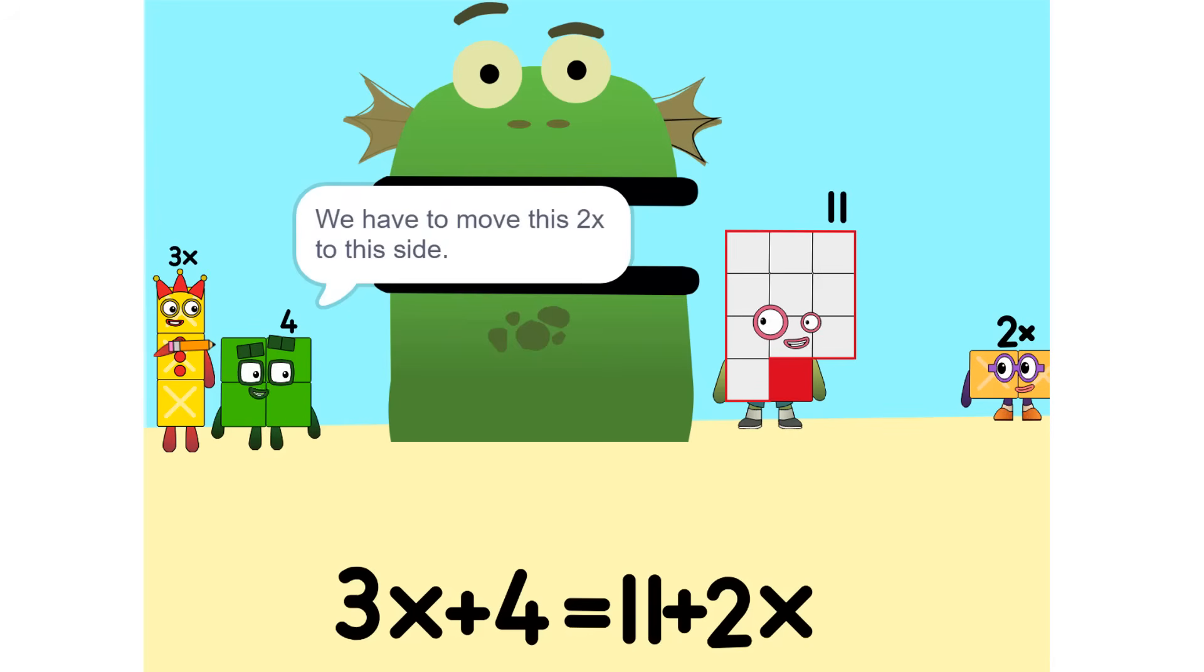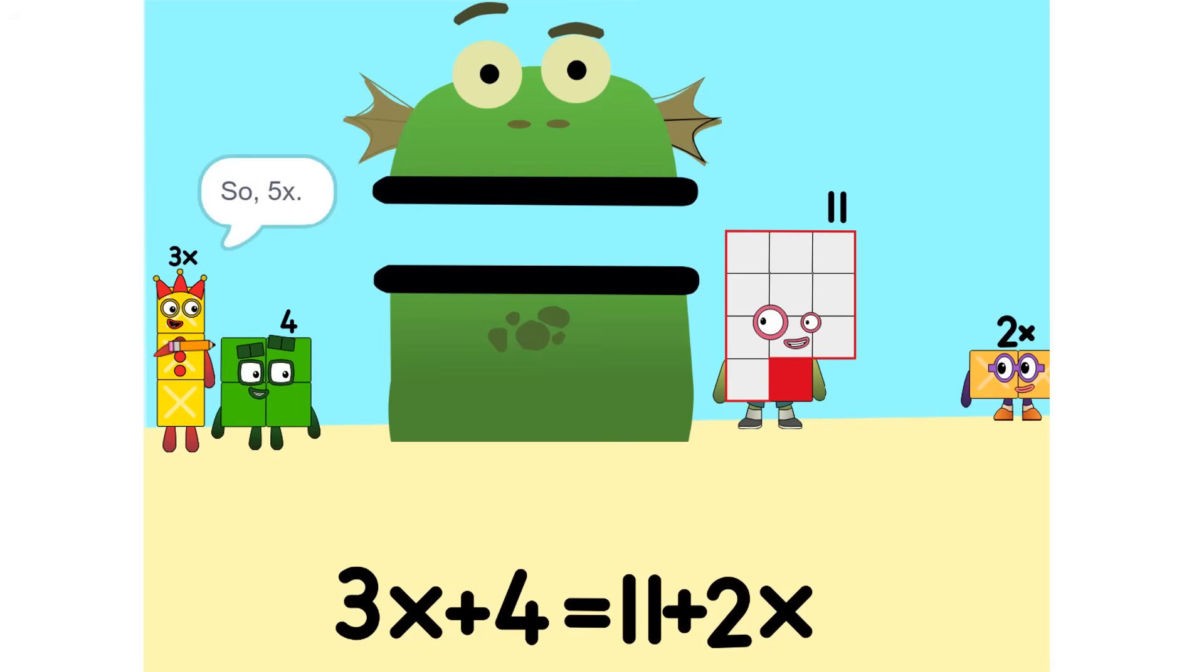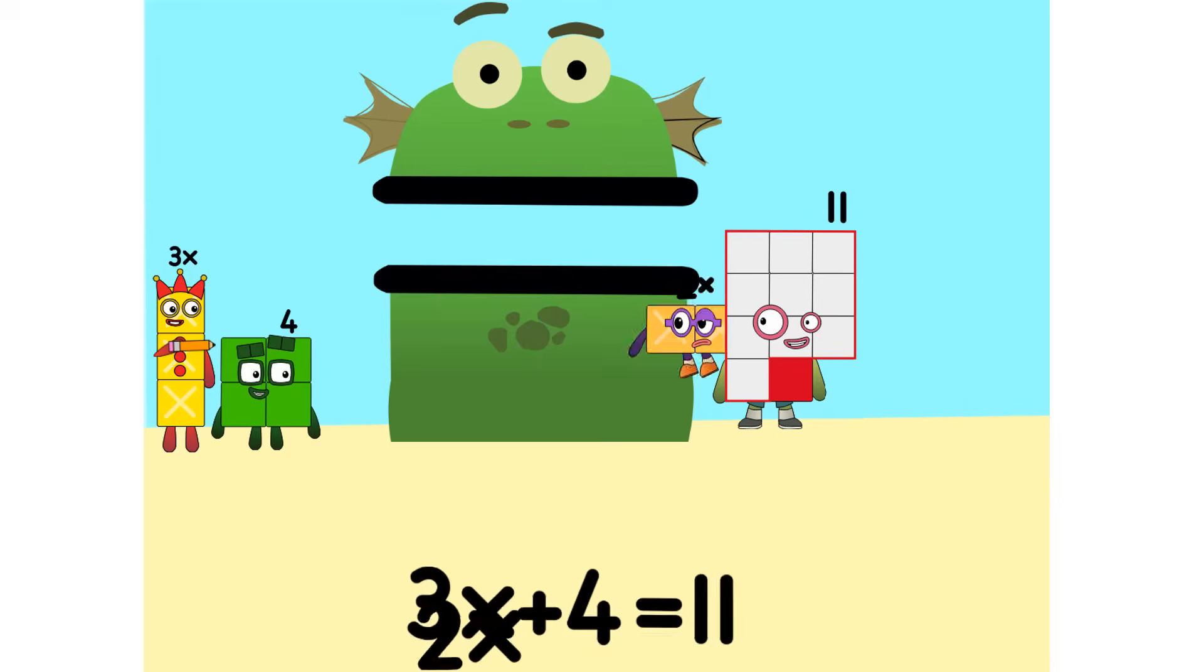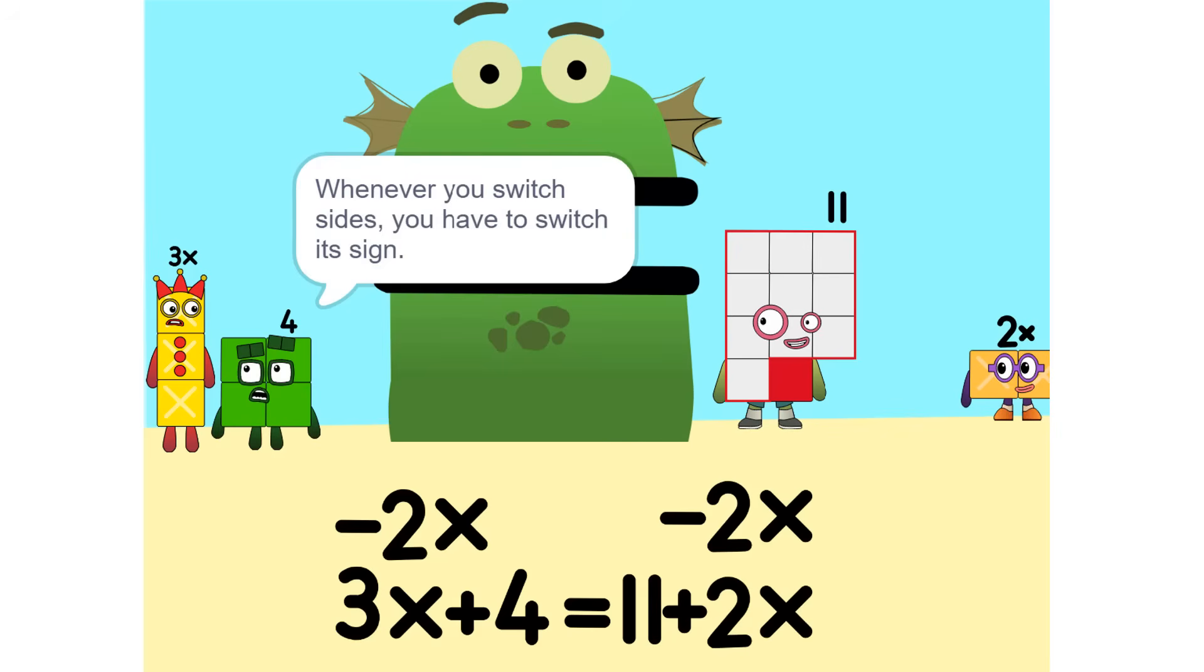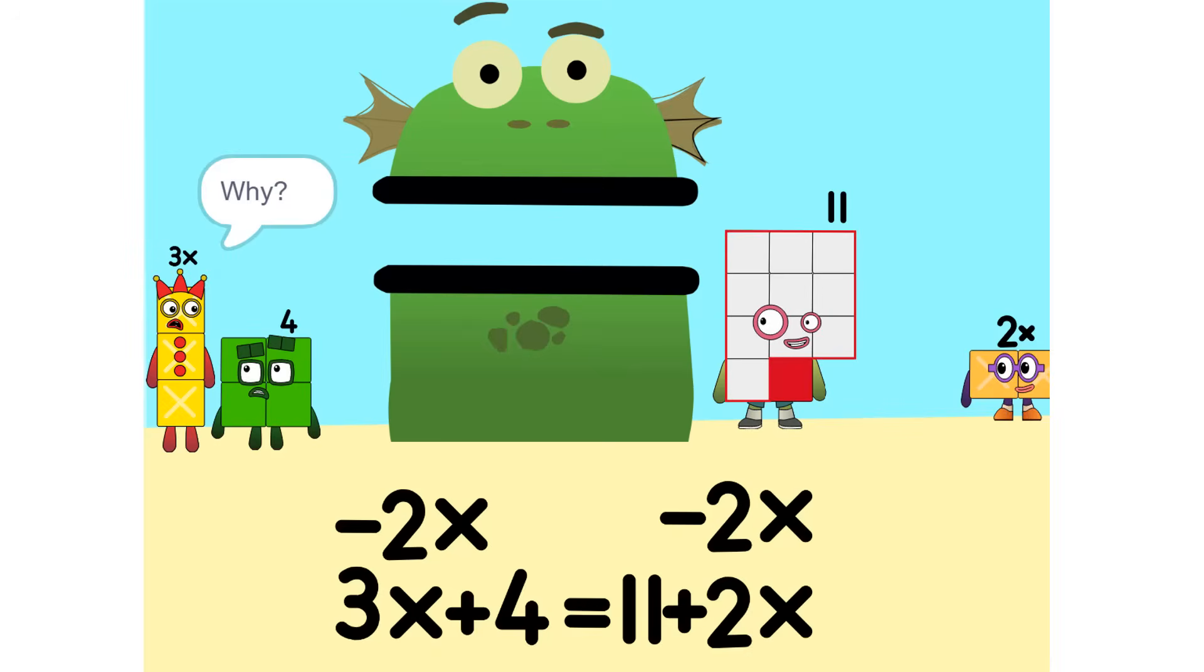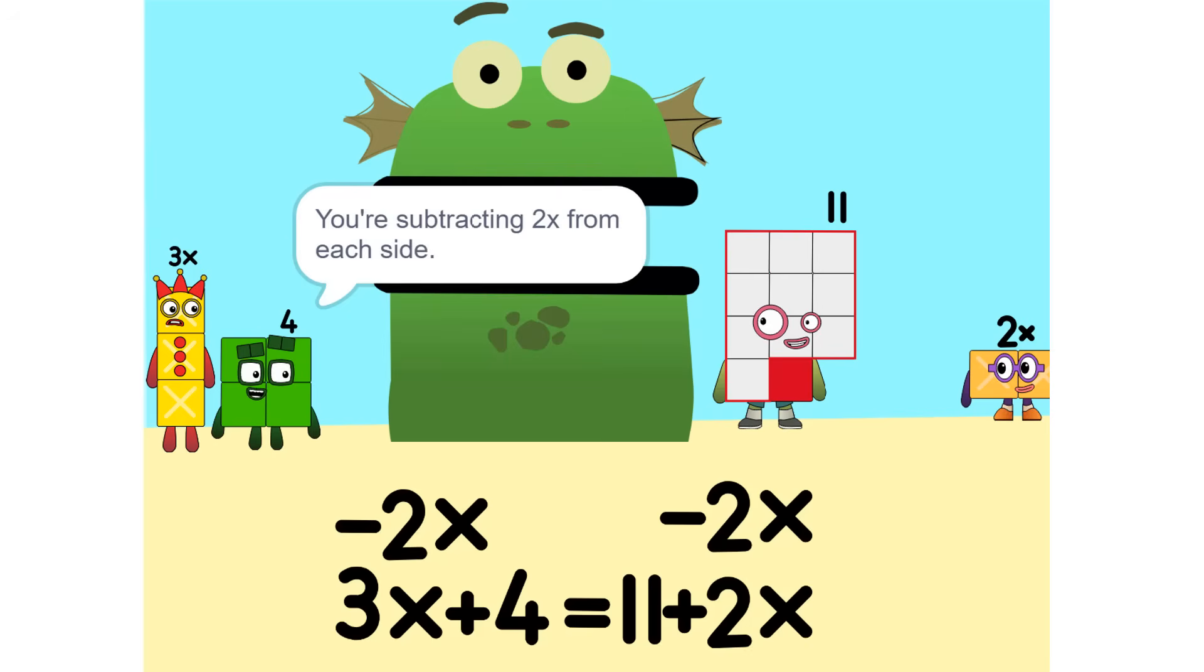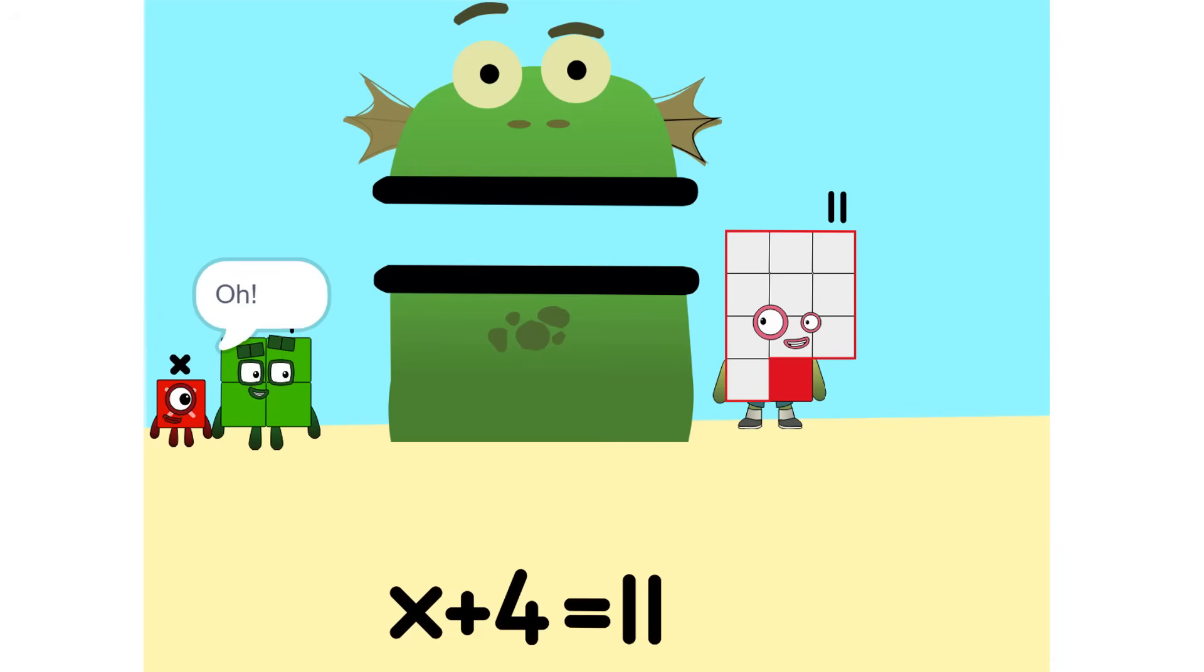Now we have to move things around. We have to move this 2X to this side. So, 5X. Whenever you switch sides, you have to switch its sign. So if it's positive, it becomes negative and vice versa. Why? Think of it this way. You're subtracting 2X from each side. So it'd just be 1X or X. Correct.